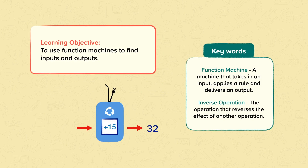Our key words: function machine — a machine that takes an input, applies a rule, and delivers an output. And the inverse operation — the operation that reverses the effect of another operation.